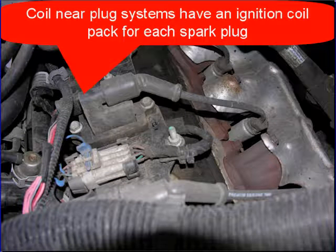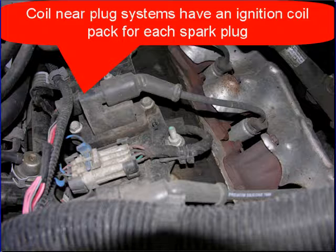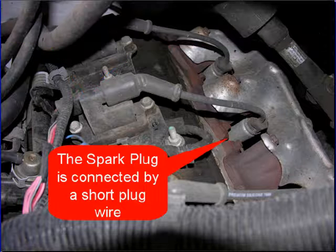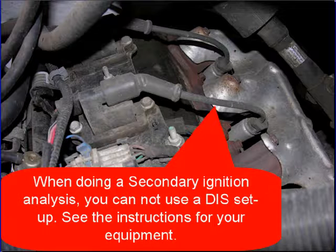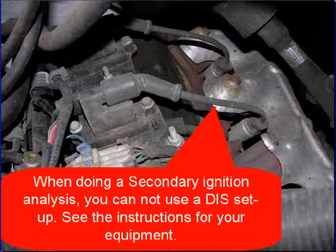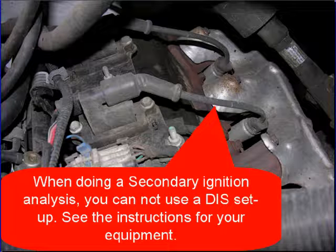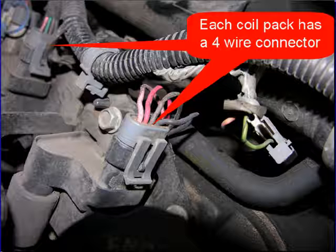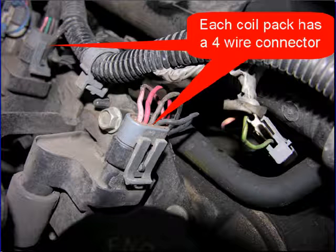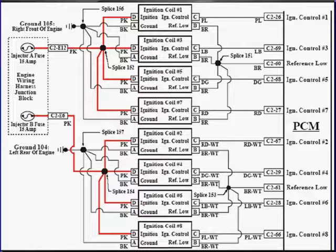You're here because coil near plug systems have an ignition coil pack for each spark plug. The spark plug is connected by a short plug wire. When doing secondary ignition analysis on these systems, you cannot use the DIS setup for your scope. See the instructions for your individual equipment.